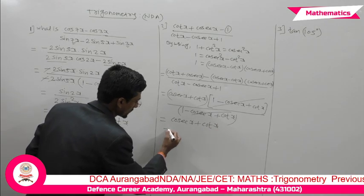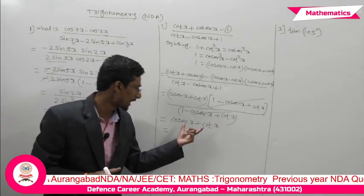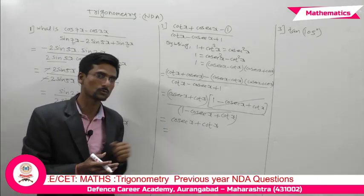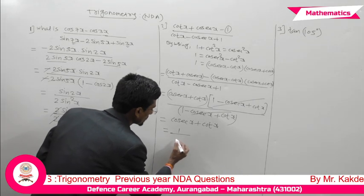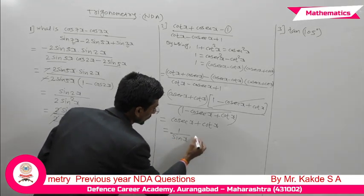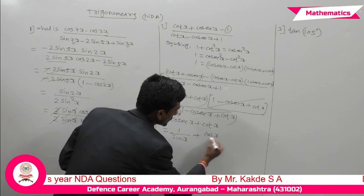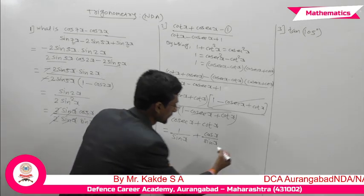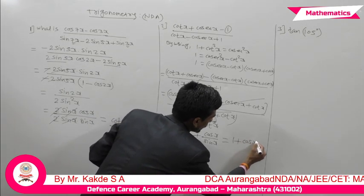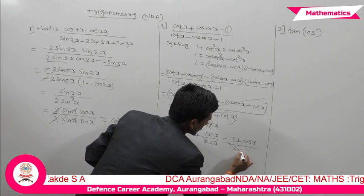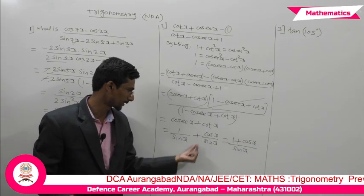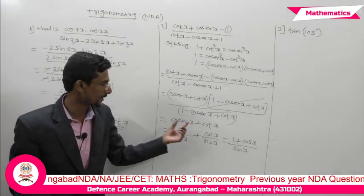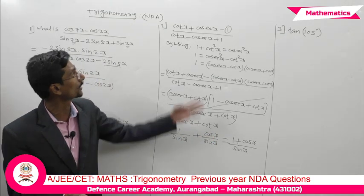So the answer is cosecx + cotx. This can also be written further: cosecx is 1/sinx and cotx is cosx/sinx, so combining gives (1 + cosx)/sinx. The answer depends on the options given — you may need to go further. This is the solution of the second example.